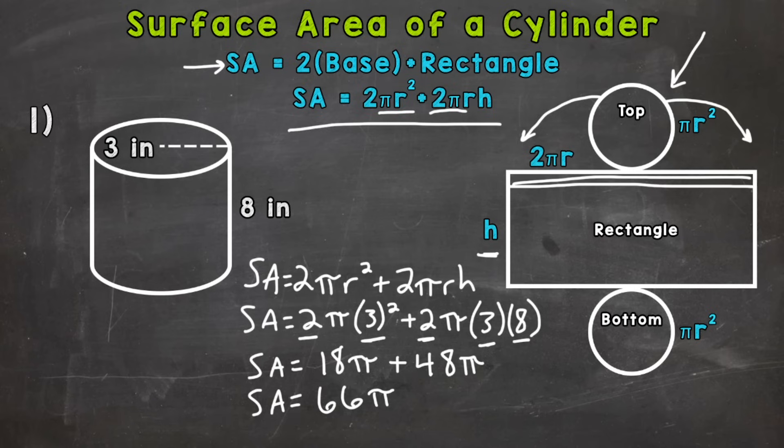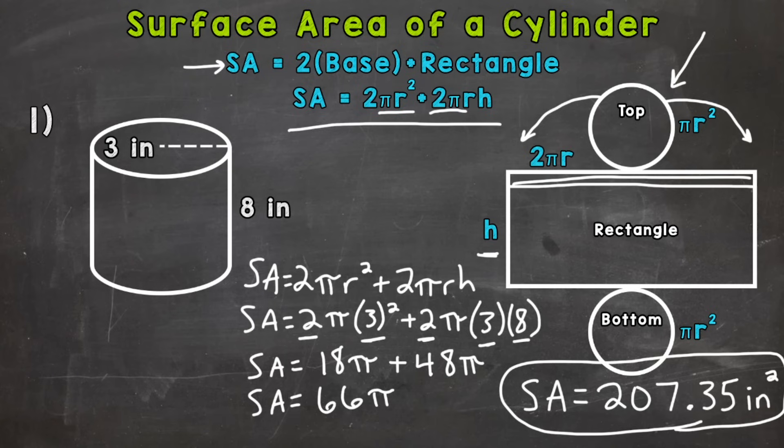So once I plug that in, I'm going to come to the right where I have more room. I get surface area equals 207. And I get a very long decimal. So I'm going to round this to the nearest hundredth. So I get 35 hundredths, 0.35. And this is surface area. And we're working with inches. So it's square inches. So we get a final answer of 207.35 square inches. So there you have it.